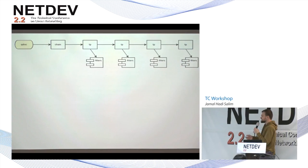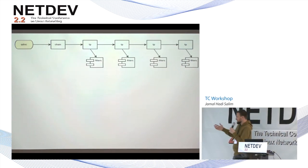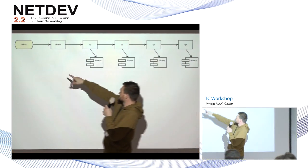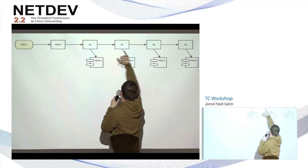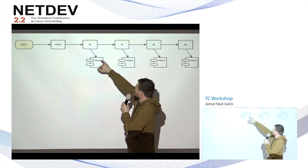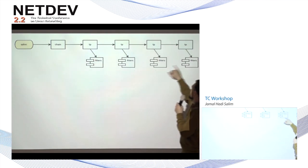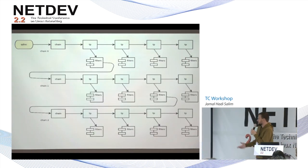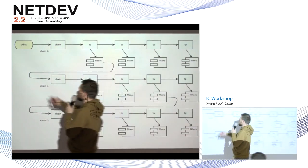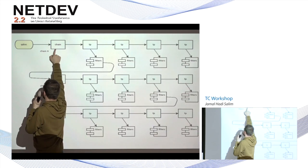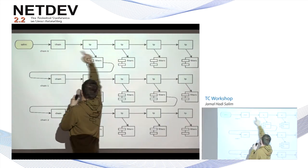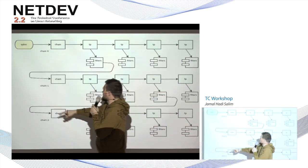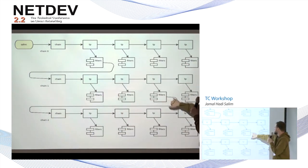I wanted to show how it worked previously versus now. Previously you have a QDisc, then a chain, and inside the chain there are a couple of TPs, and every TP has a list of filters which are processed. Now with multichain, packet processing always starts from chain zero, and if a particular filter is hit and that action is executed, it can jump to another chain.